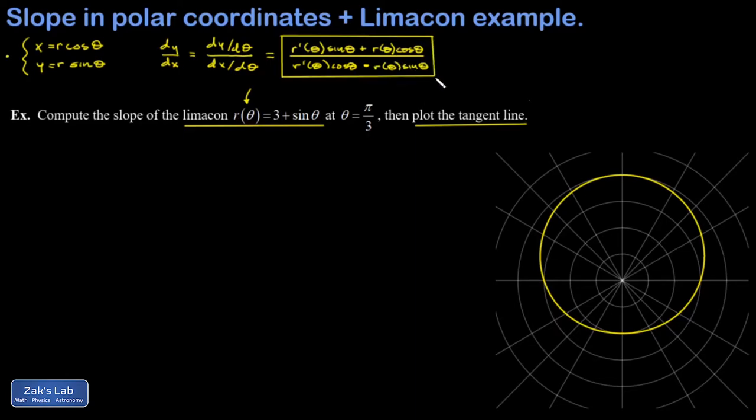All right, so there's our formula for the slope of a polar curve. Now let's get into the example. Just as a quick note before I start, r prime of theta for this polar curve is just going to be cosine theta.